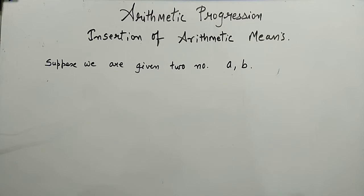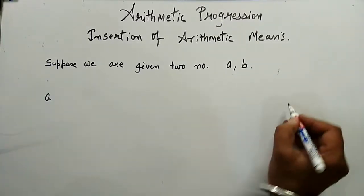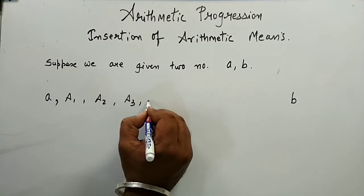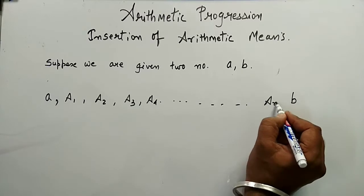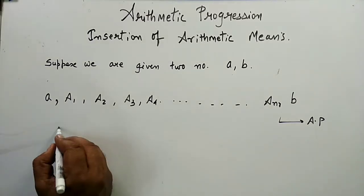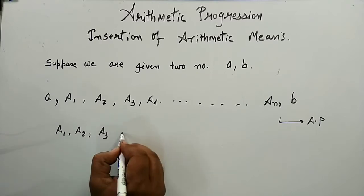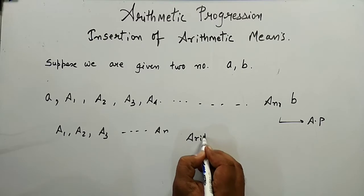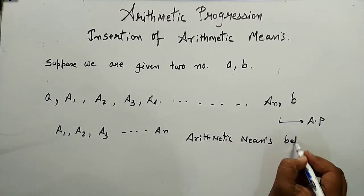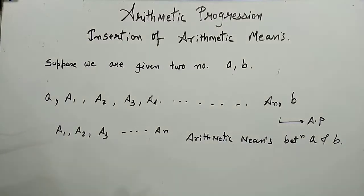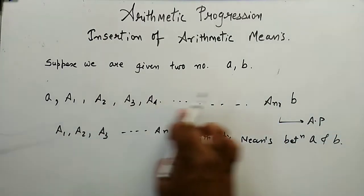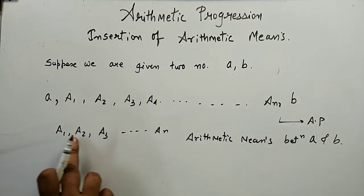Suppose we are given two numbers a and b, and we have to insert n numbers — a1, a2, a3, a4 up to an — such that the whole sequence will be in arithmetic progression. Then a1, a2, a3 up to an will be the arithmetic means between a and b. We are given a and b and we have to insert n numbers between a and b such that this sequence is in AP.